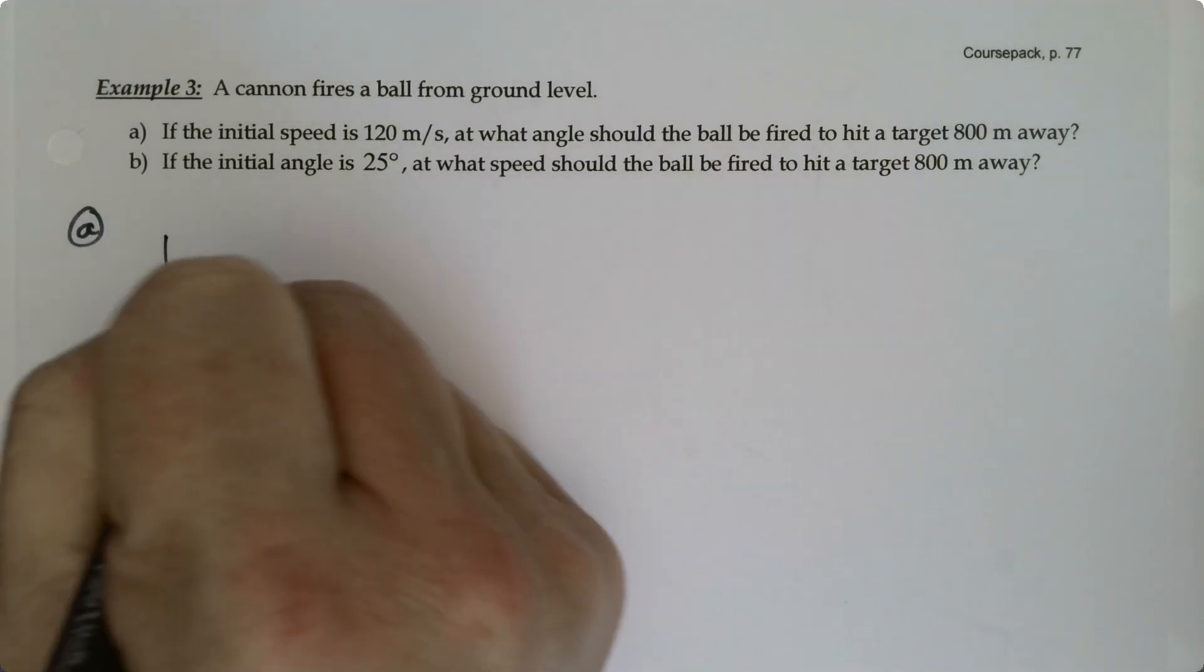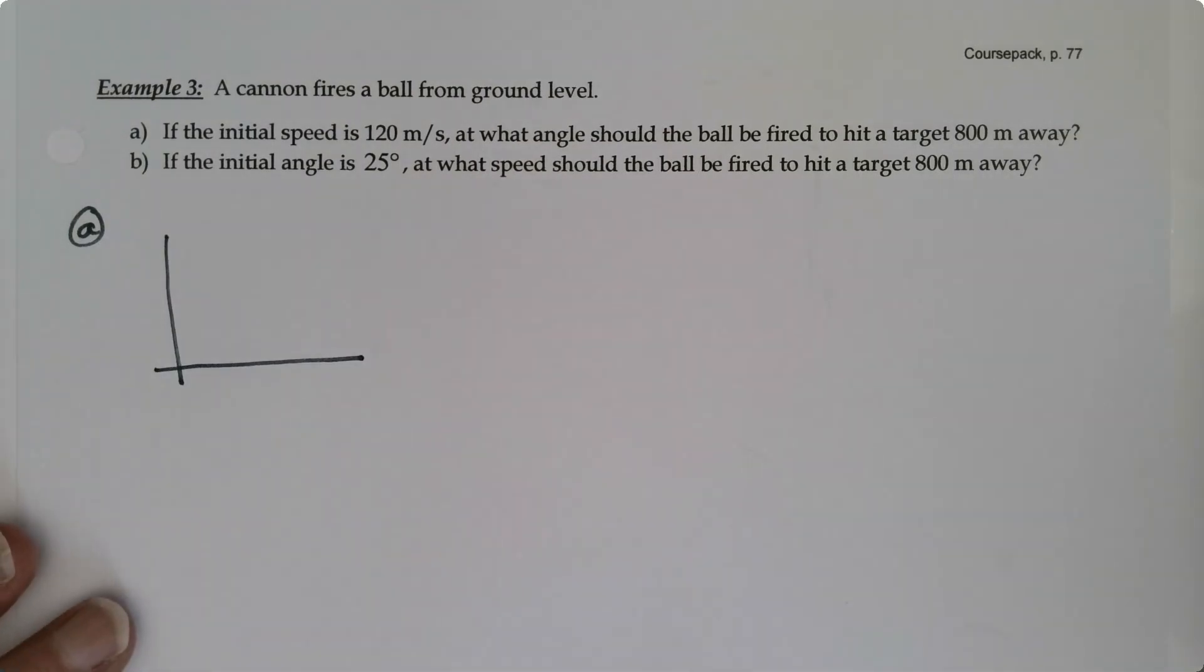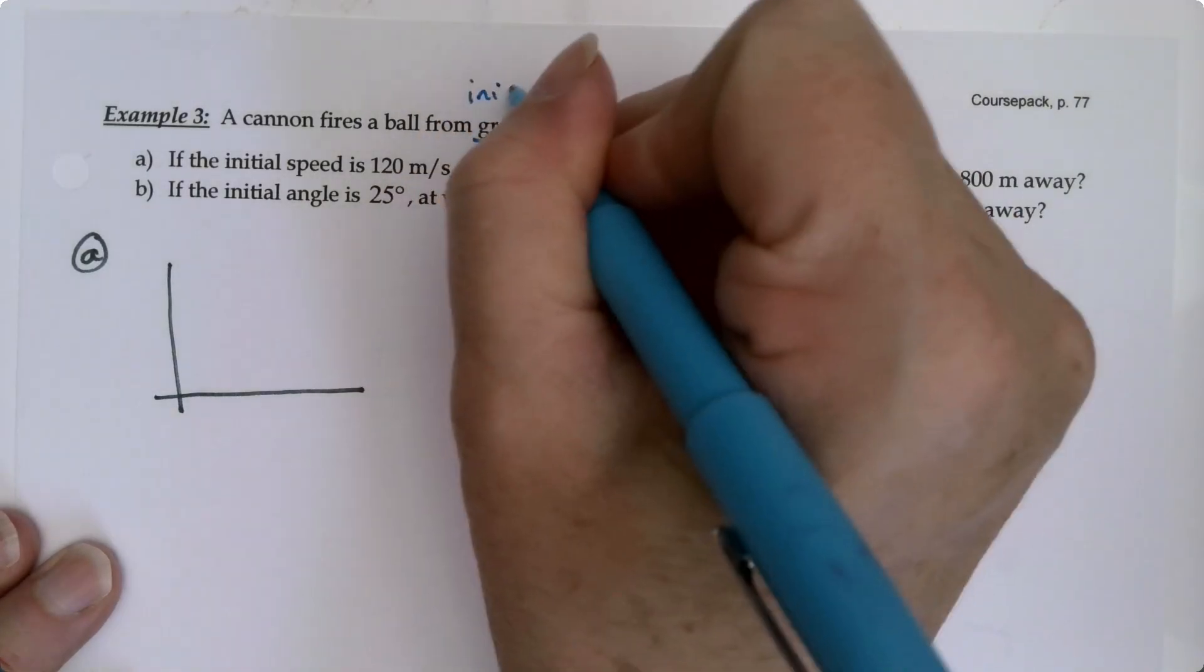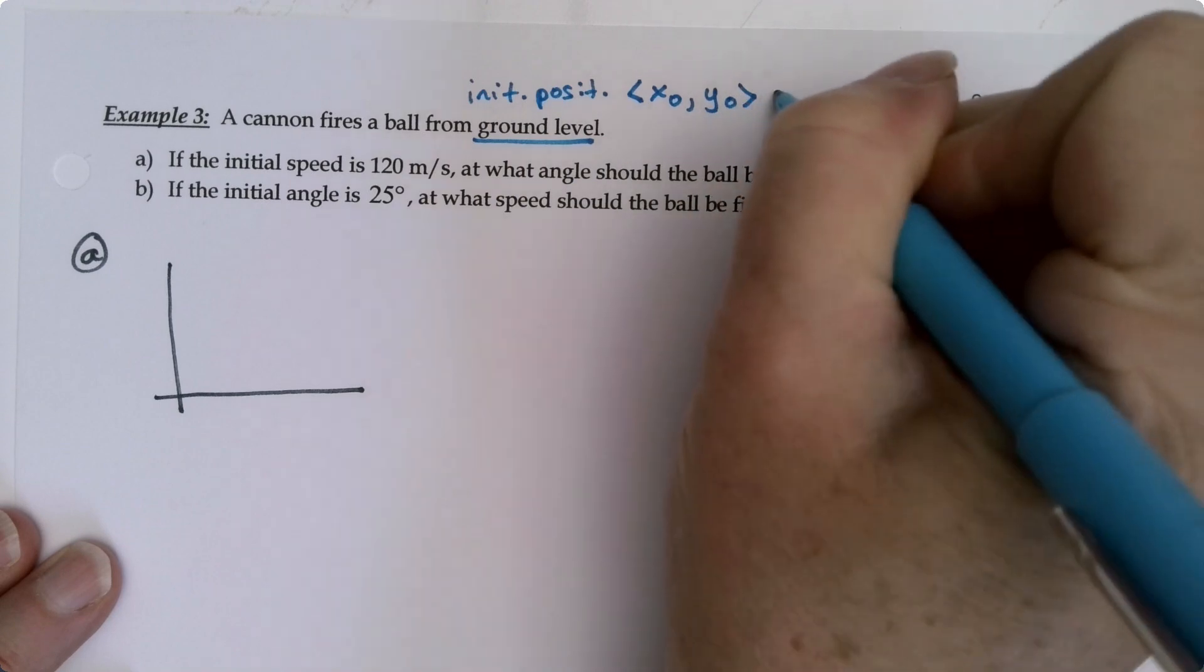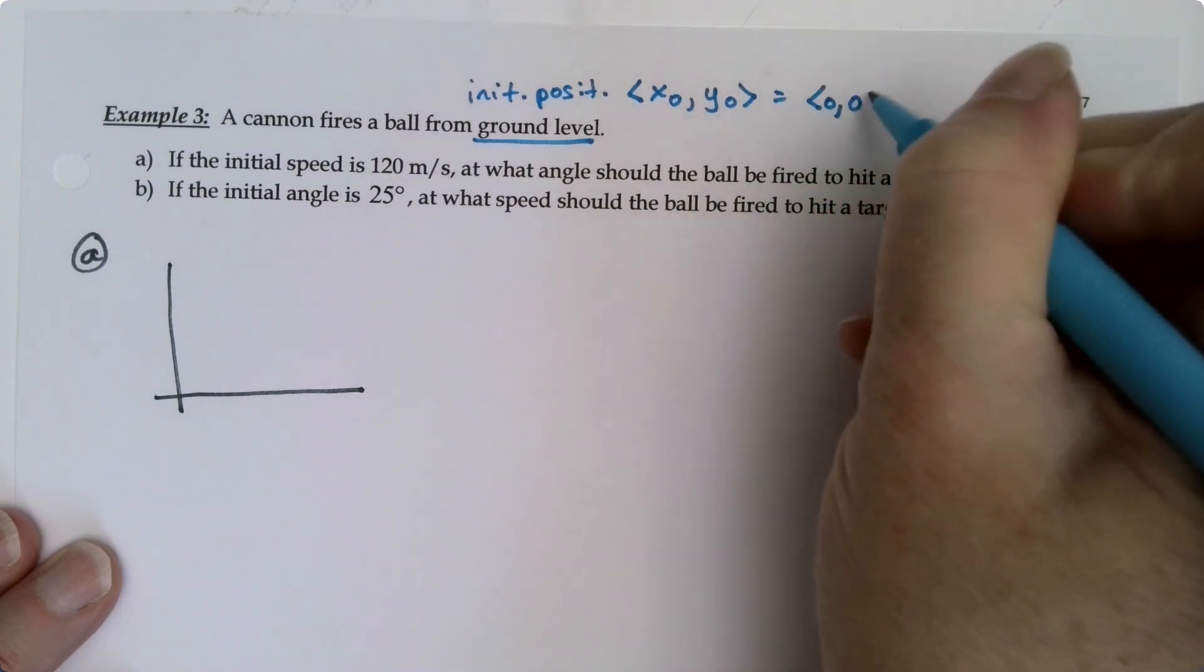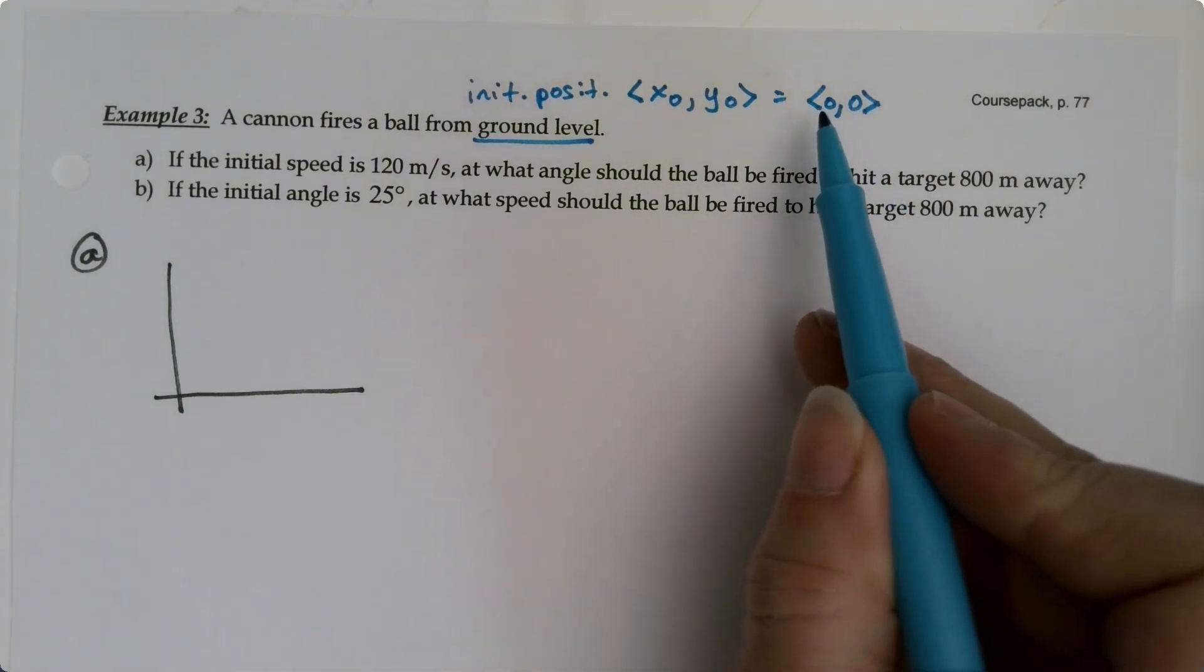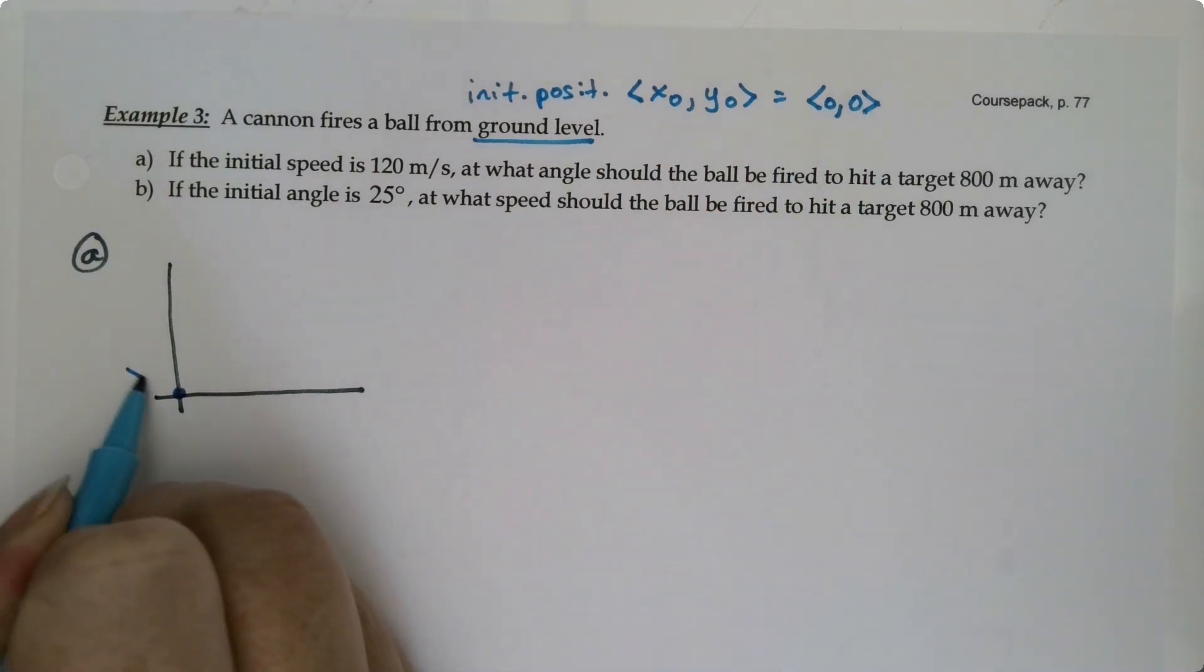We have a cannon firing the ball from ground level. Now you'll notice that ground level right there, that's your initial position which we know as x0, y0, which will be zero, zero. The ground level gives us the y value of zero and the x is zero because it always makes sense to put the origin where you're starting.